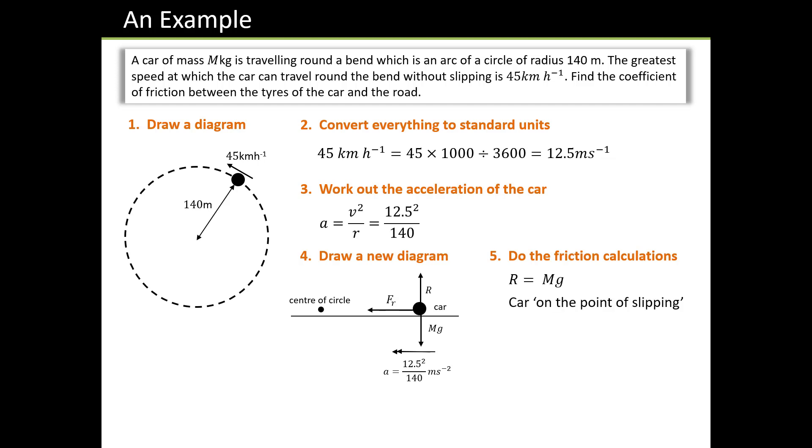First thing we need to notice is the road is horizontal, so r is just equal to mg. Second thing, the car is on the point of slipping, so that frictional force fr must be f_max. And if you remember your friction formula, f_max is μ, the coefficient of friction, times the normal reaction, which is just μmg. We also know that F = ma. So we can write down μmg equals m times acceleration. We've got an m on both sides, so we cancel those out. We know what g is, and we know what a is. It's 12.5 squared over 140. So we can rearrange and get that answer. μ comes out as 0.114.